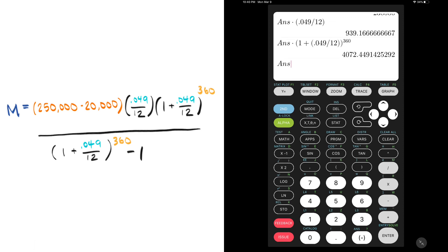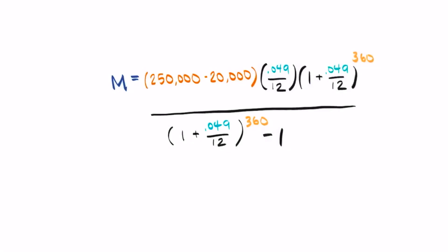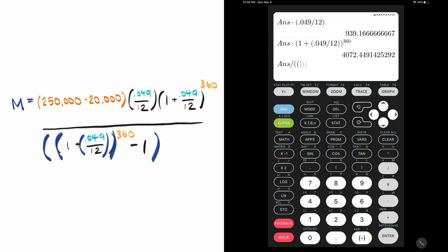So I'll press the answer button again and divide by the whole denominator. Feel free to break this part up into smaller sections, but I'm going to practice using multiple parentheses. Looking at the bottom of the fraction, I see that the innermost grouping is 0.049 over 12, then the next will be including the plus 1, and then the outer grouping is the denominator itself, so we'll need two open parentheses at the beginning.